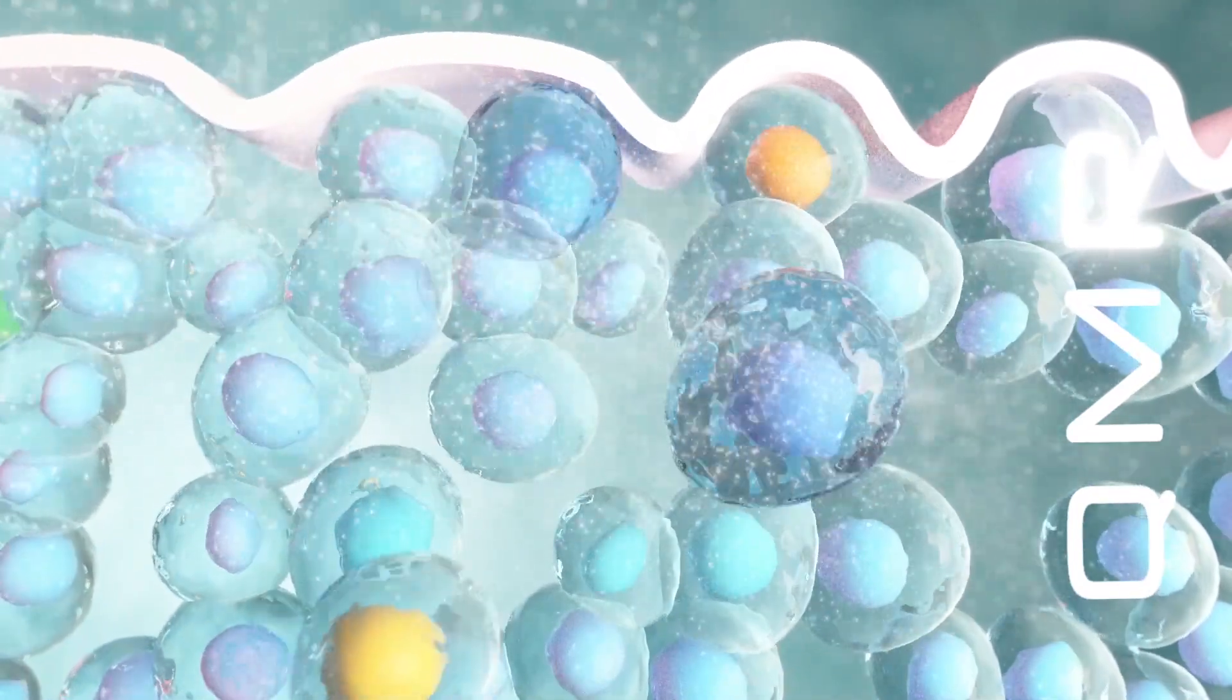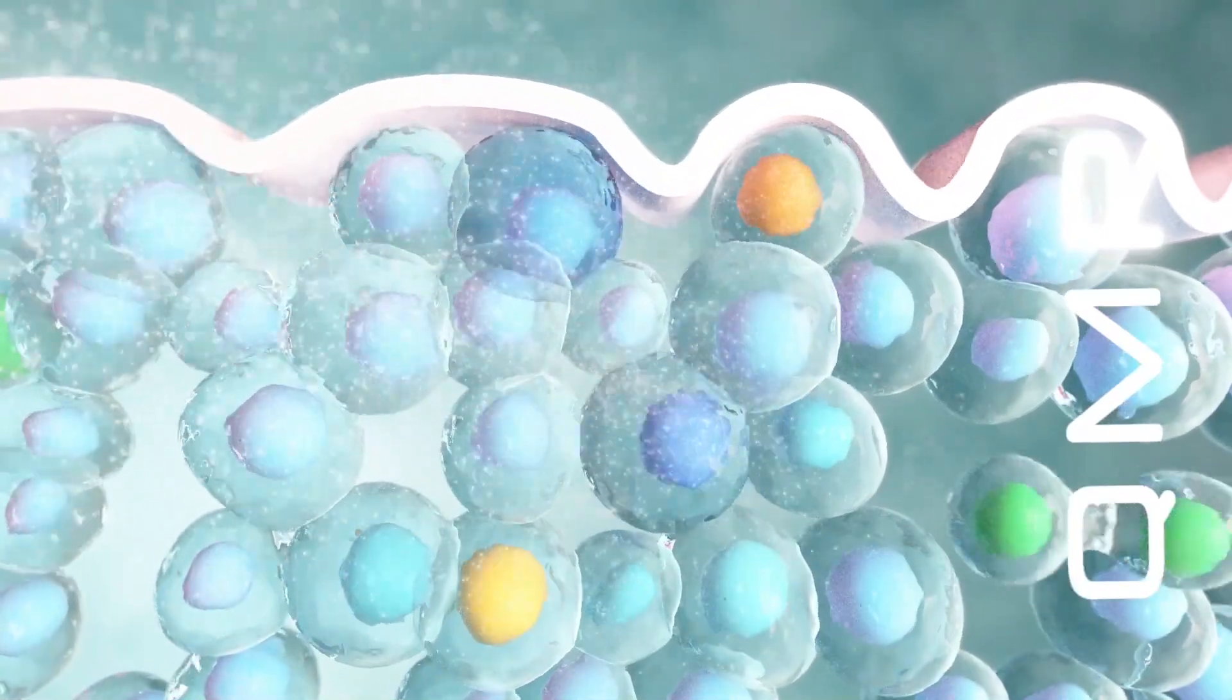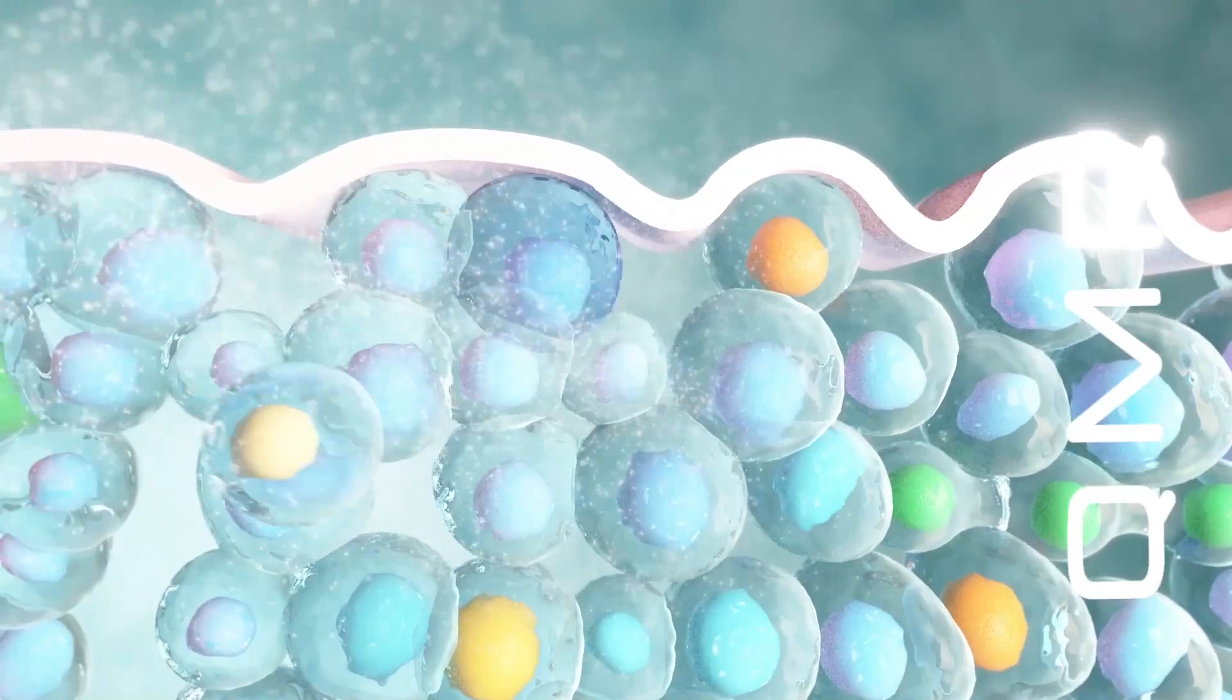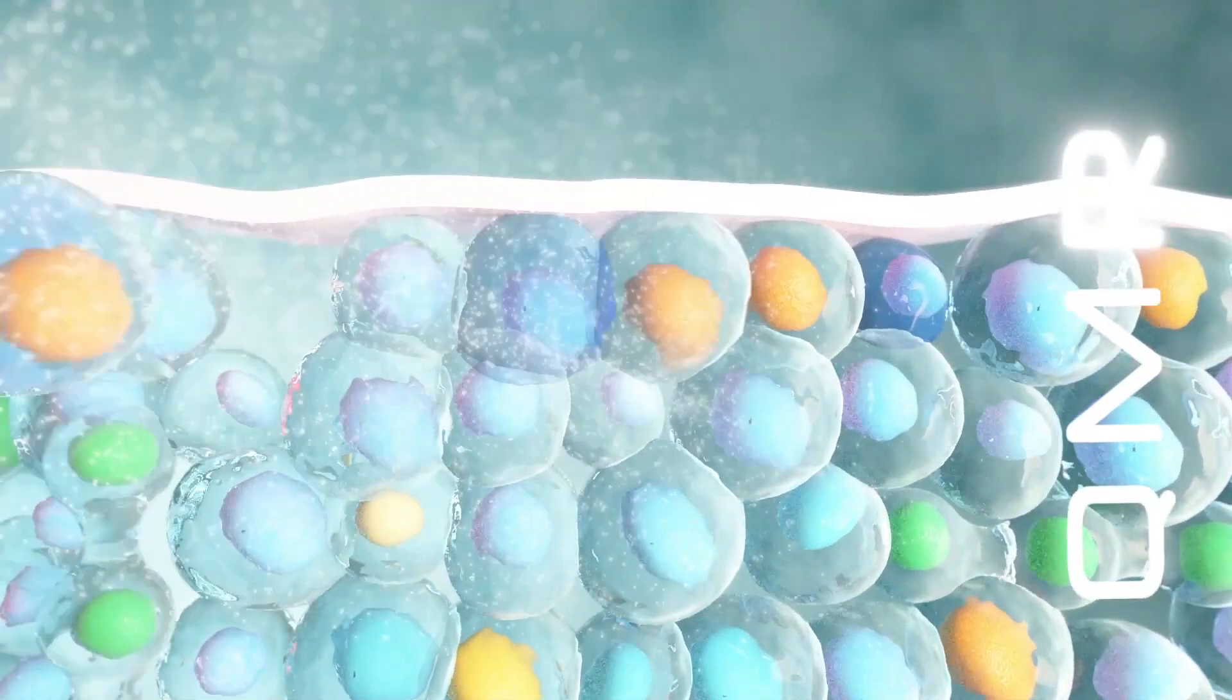The stem cells stimulate the production of collagen and elastin. The result is a reversal of the aging process in the tissues compared with the usual course of aging. The results are long-lasting.